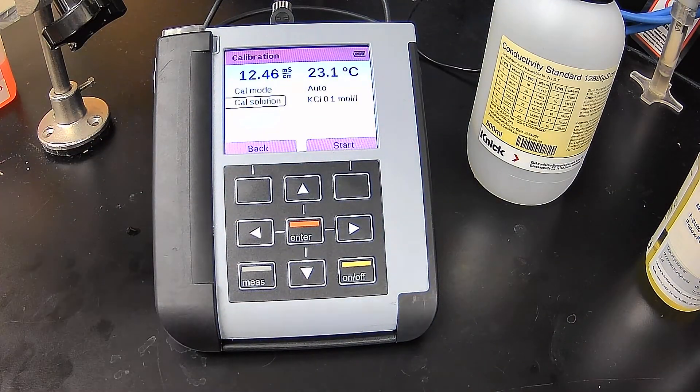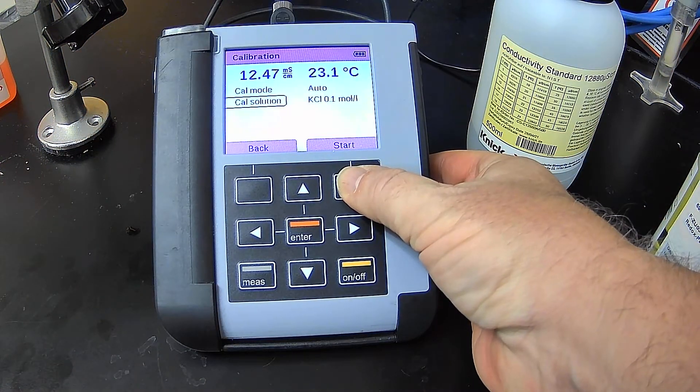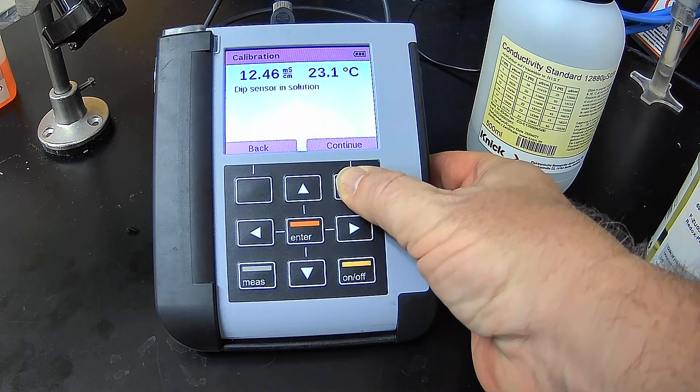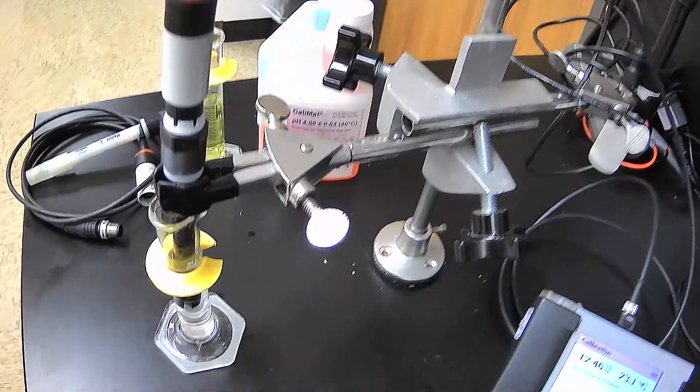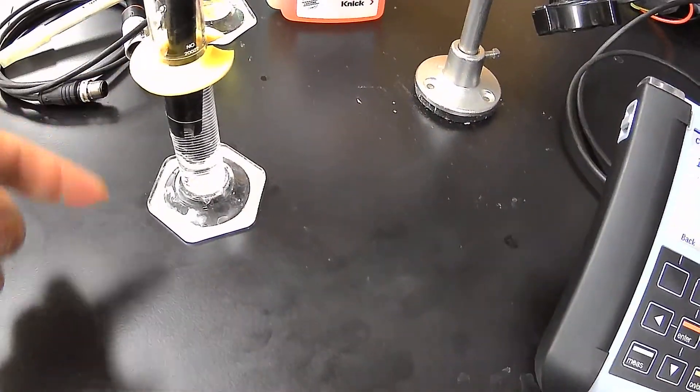So I hit enter, then I hit start. It's saying dip the sensor in the solution. I'm just going to turn so you can see there's my sensor in the solution, the beaker completely immersed. Hopefully you can see that I'm stable temperature-wise, stable measurement-wise.